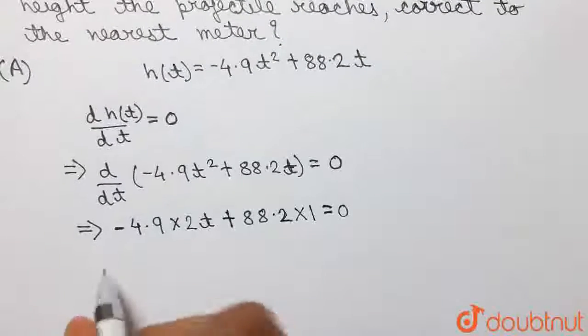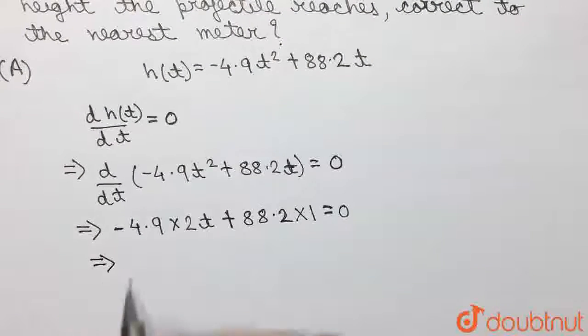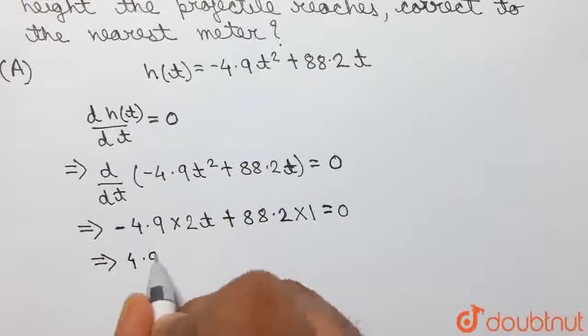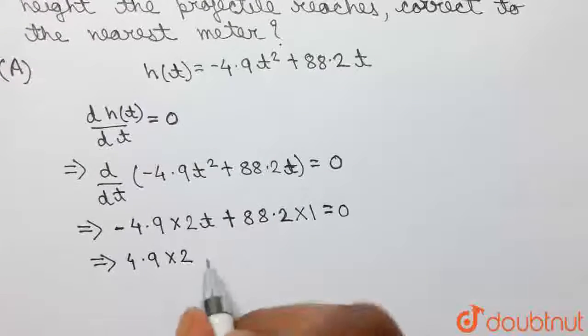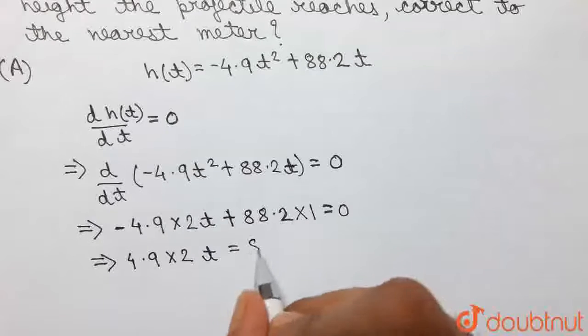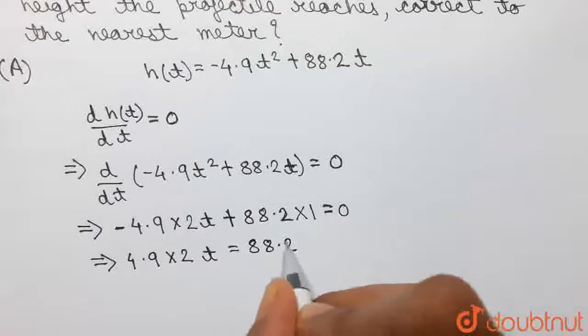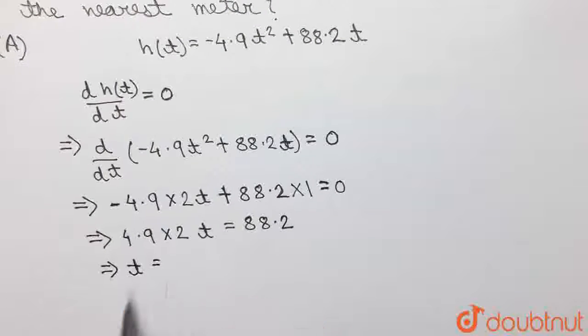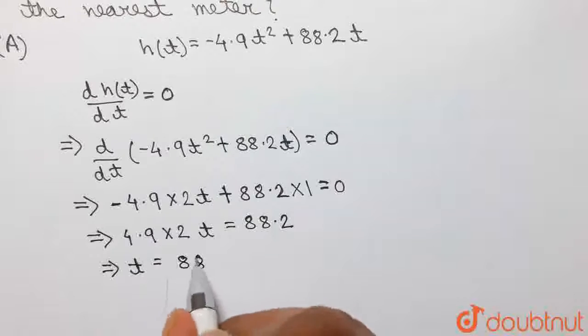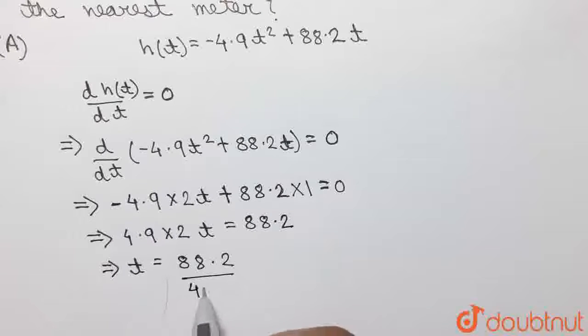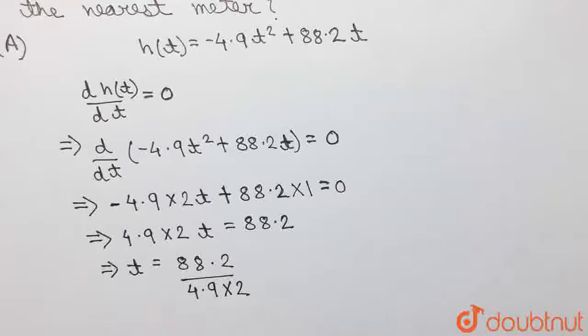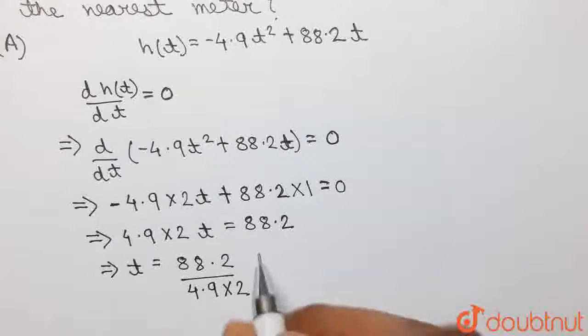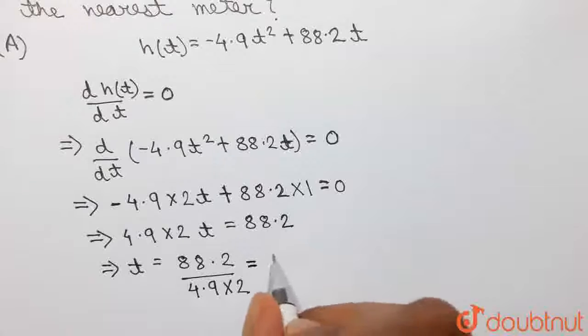So, this equation can now be simplified and written as 4.9 × 2t = 88.2. And from here, the value of t can be found at which the projectile will reach its maximum height, that can be given as 88.2 / (4.9 × 2). And this value when calculated using a calculator will come out to be equal to 9.